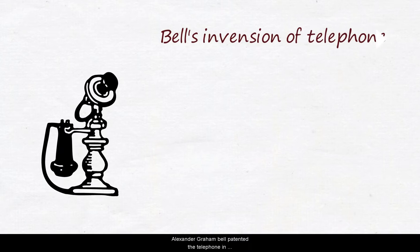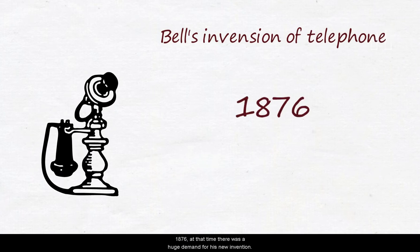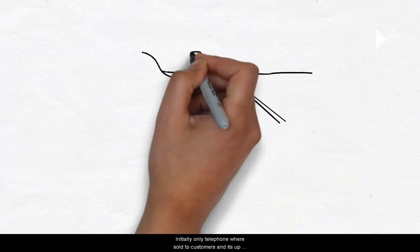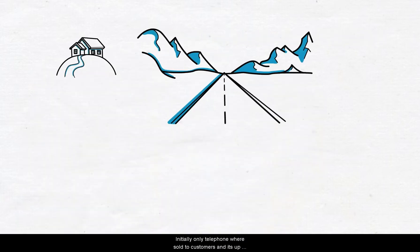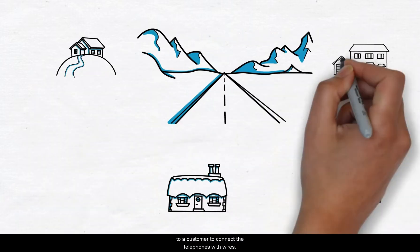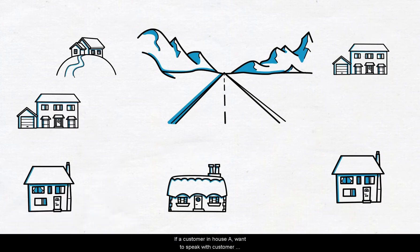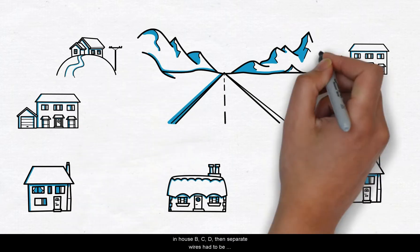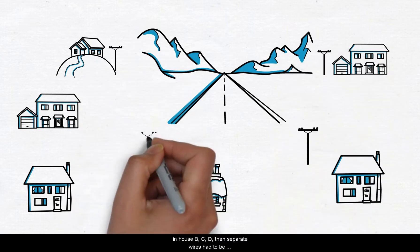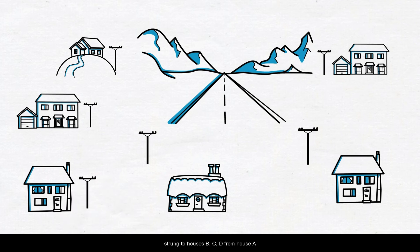Alexander Graham Bell patented the telephone in 1876. At the time there was a huge demand for his new invention. Initially only telephones were sold to customers and it was up to the customer to connect the telephone with wires. If a customer in house A wanted to speak with customers in house B,